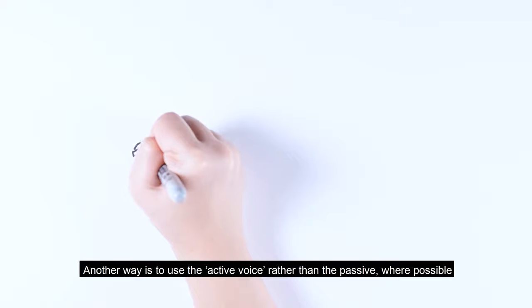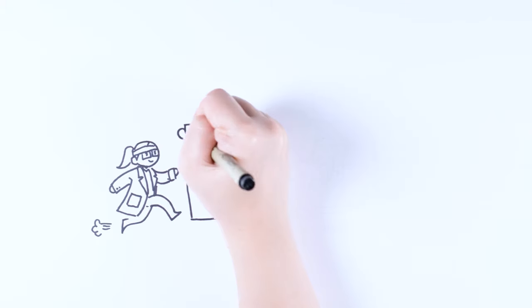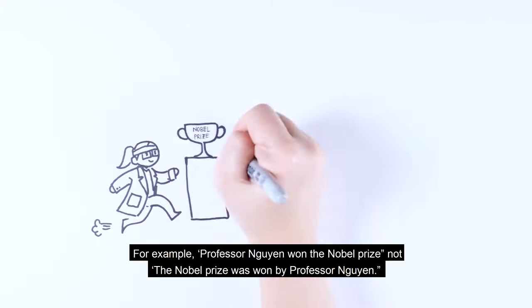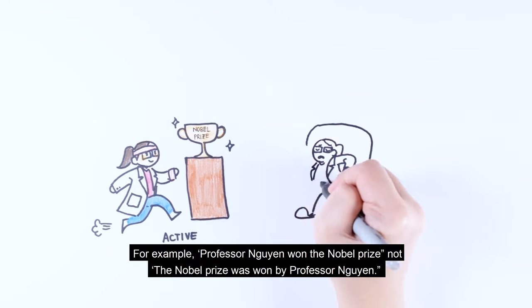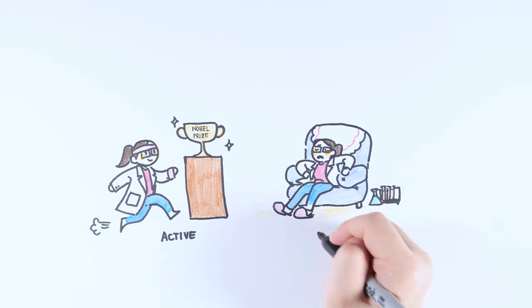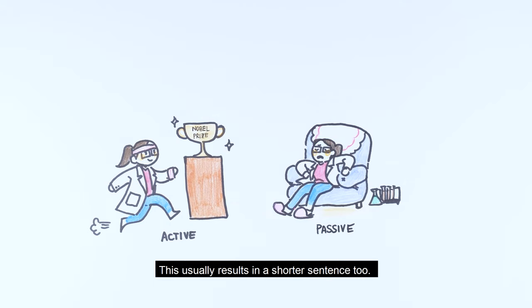Another way is to use the active voice rather than the passive where possible. For example, Professor Nguyen won the Nobel Prize, not the Nobel Prize was won by Professor Nguyen. This usually results in a shorter sentence too.